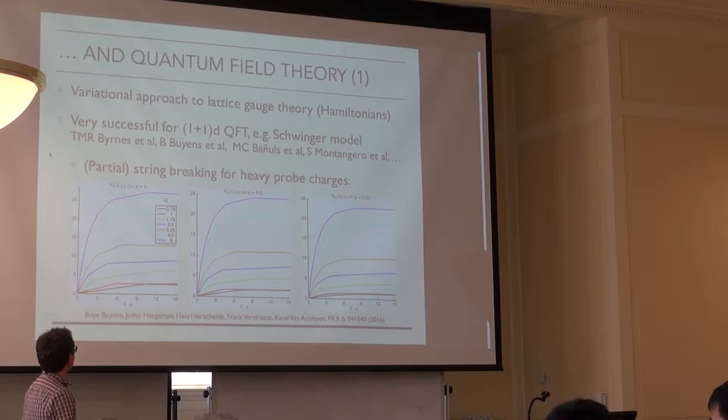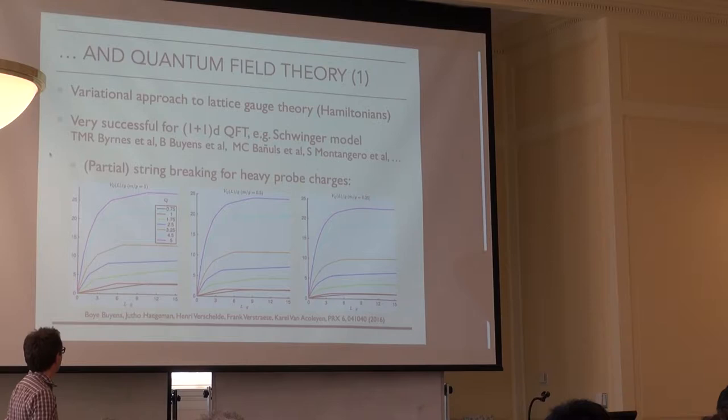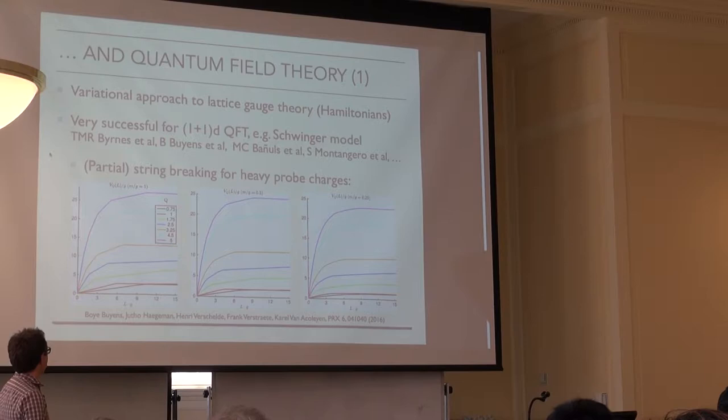Here I show one result: in full QED including dynamical fermions, you place two heavy quarks at a certain distance and plot the potential energy, or excess energy, of putting these test charges there. What you see is the concept of string breaking. Using fractional charges, string breaking cannot be completed, so what you observe is partial string breaking — to the best of our knowledge this had not been studied with Monte Carlo, which turns out to be more difficult.